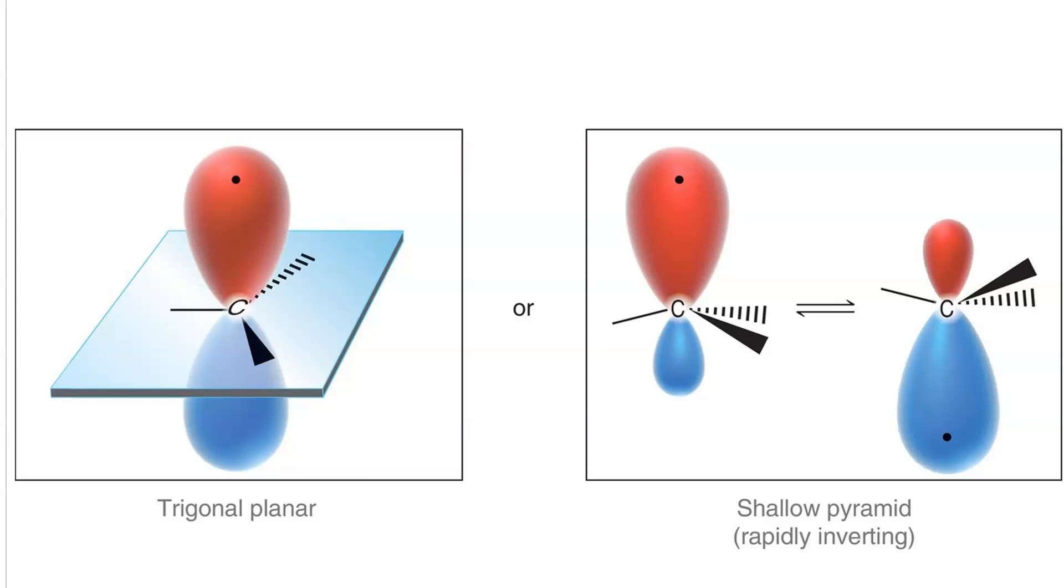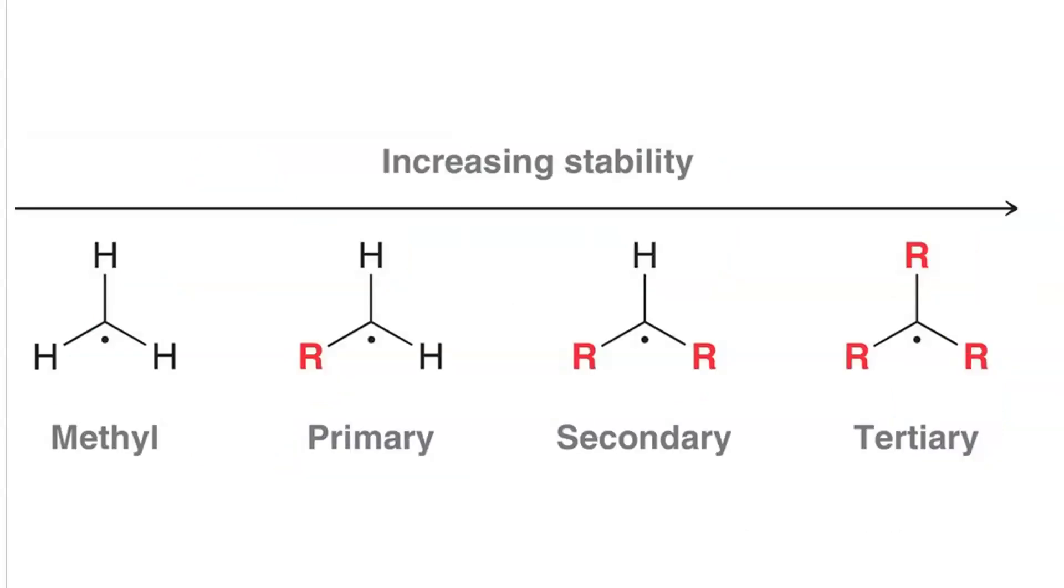In many ways, it's very similar to a carbocation. Just like a carbocation, the more substituted the radical is, the more stable it is. And the mechanism for this is hyperconjugation.